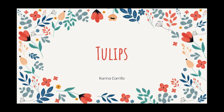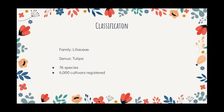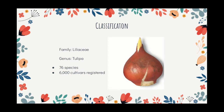My name is Karina, and I decided to do my final project presentation on tulips — specifically the genus Tulipa. Under the family Liliaceae is the genus Tulipa, which is tulips as we know them. They occur from about southwestern Europe to North Africa and Central Asia. There are currently 76 species and 6,000 cultivars registered at the moment, and they are classified by their bulbs, which are covered in a thin tunic.